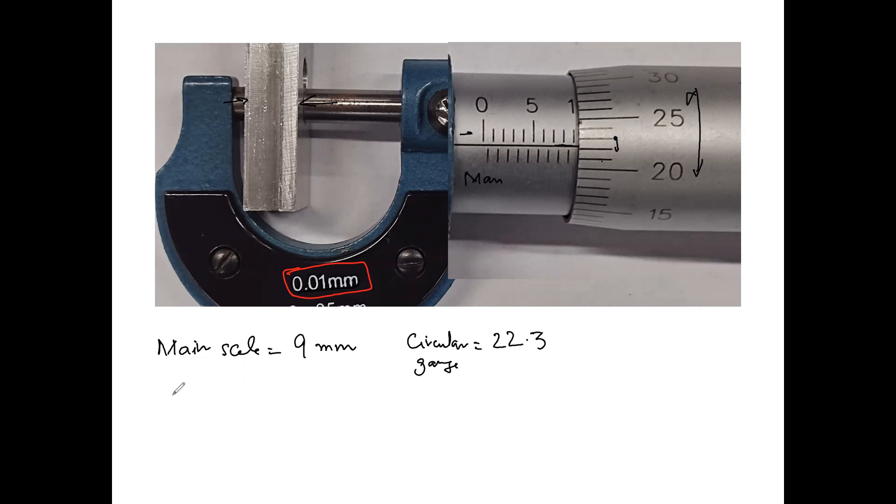So what you do for the circular scale is you multiply your circular gauge reading by its resolution, which is 0.01 millimeters. So you take 0.01 millimeter and multiply it by 22.3. So it turns out to be 0.223 millimeters.